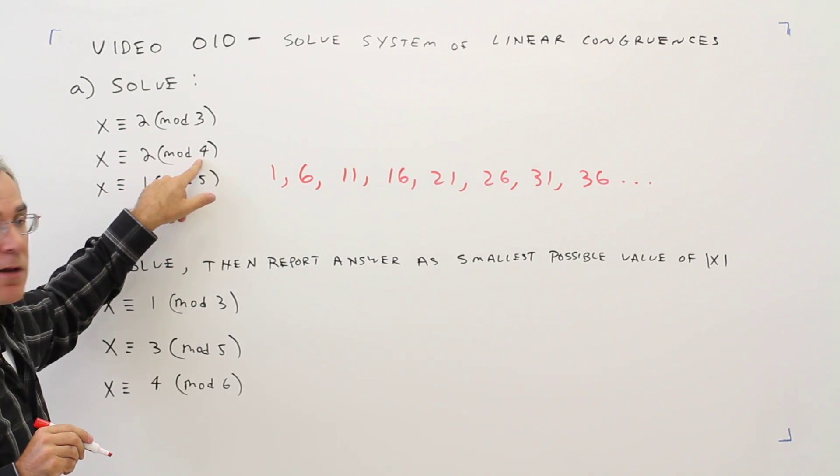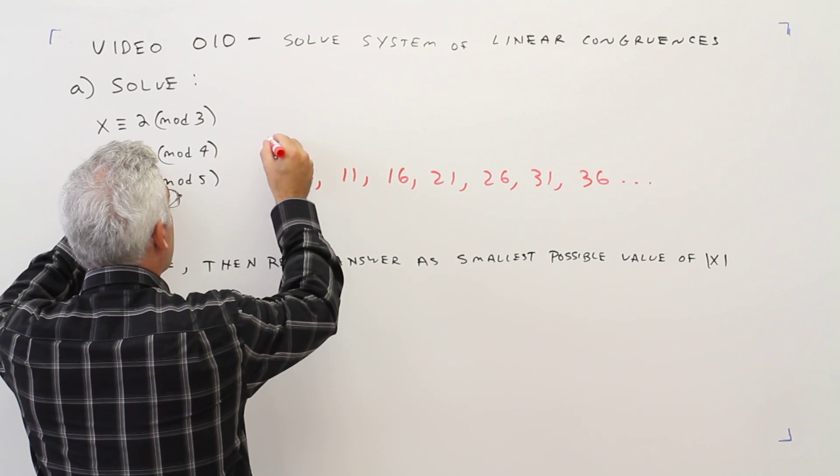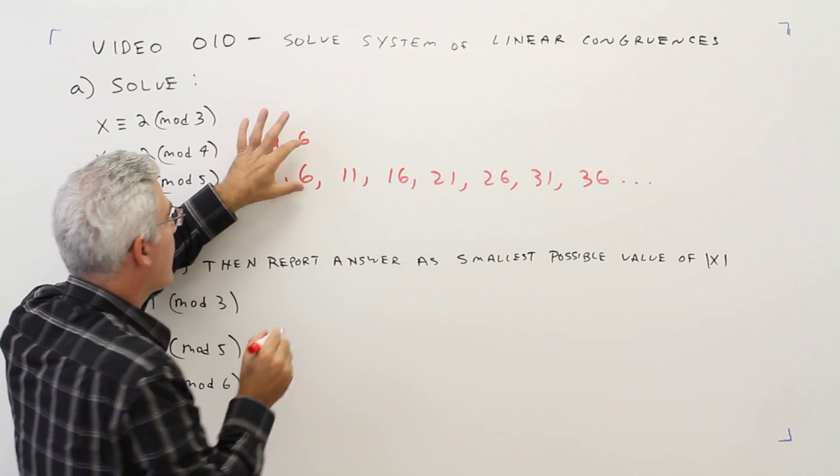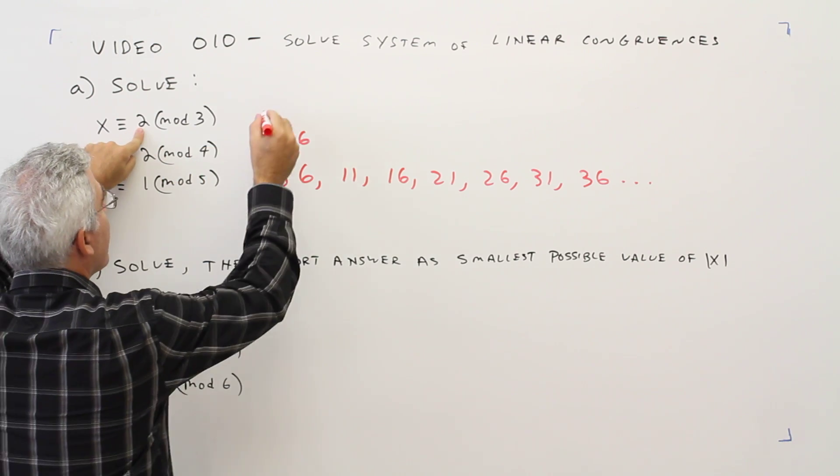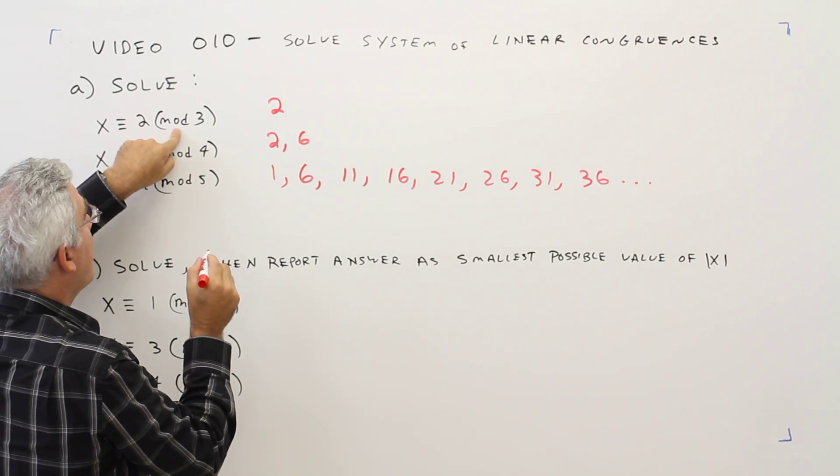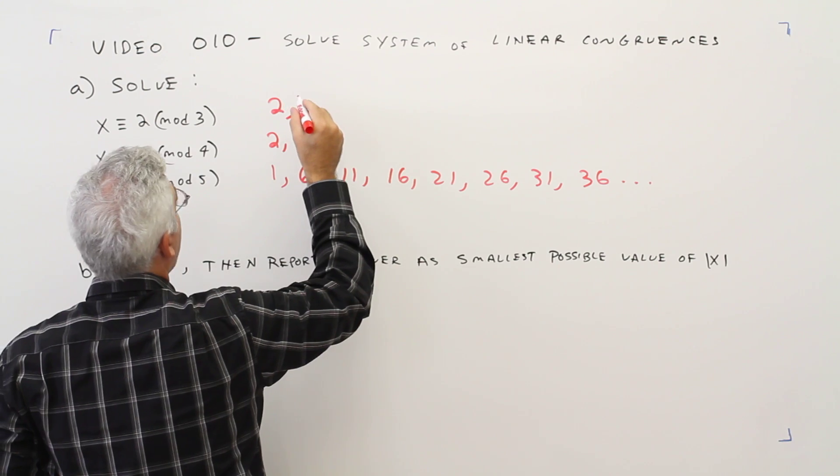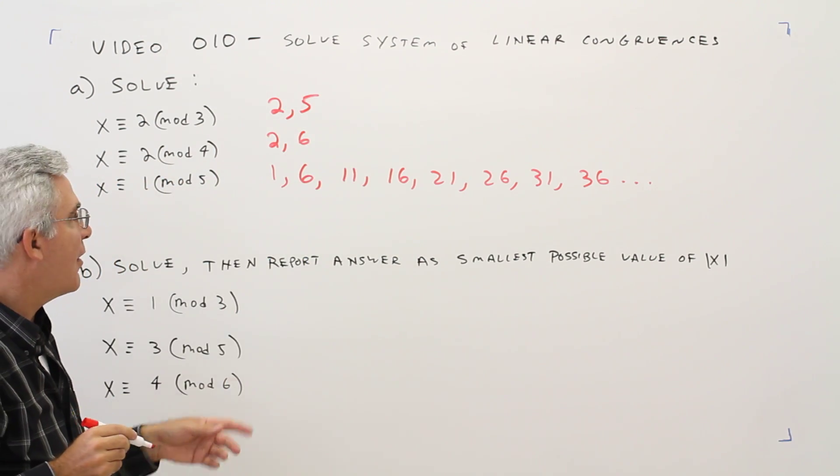I'll start at 2 and keep adding 4s. 2, 6, maybe I'll get lucky and have a 6 up here. Let's check. Start with 2 and add multiples of 3. So add 3, 5, no such luck.